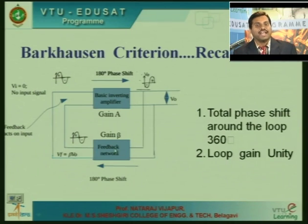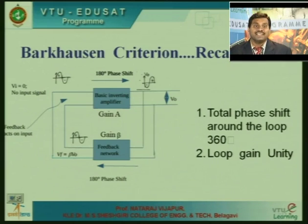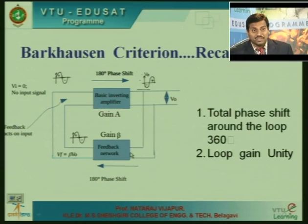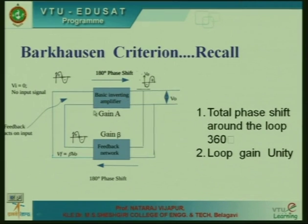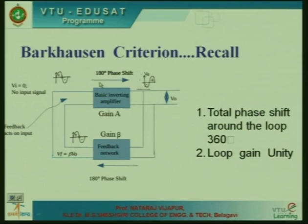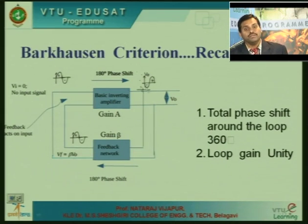In the case of an oscillator, the loop consists of an amplifier and a feedback network. Oscillators are self-generating circuits — they make use of a DC source and give you a waveform of desired frequency, shape, and amplitude. For positive feedback to occur, the phase-shifted signal should be in phase with the incoming signal. If the amplifier introduces 180 degrees phase shift, the feedback network must also introduce 180 degrees, making the total 360 degrees.